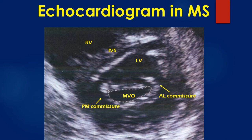Ideally, the smallest full circle should be taken to planimeter the valve area. If it is not a full circle, the subvalvar pathology may be measured as the valve orifice. If the smallest full circle is not taken, it will represent the valve proximal to the severest stenosis, i.e., the valve belly.